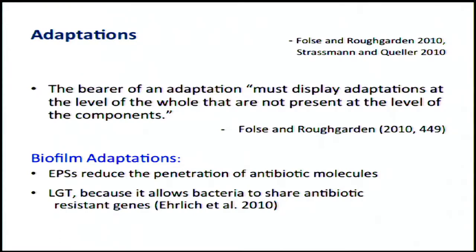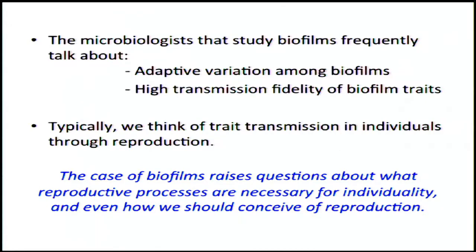The point is that EPS and lateral gene transfer are not things found at the level of individual bacteria — they're only at the level of the biofilm. Microbiologists that study biofilms frequently talk about adaptive variation among biofilms, and there's high transmission fidelity of biofilm traits. The question isn't whether they transmit traits from biofilm to biofilm; the question is how they do it. Typically we think of this being done through reproduction, which raises questions about what reproductive processes are necessary for individuality and how we should conceive of reproduction.